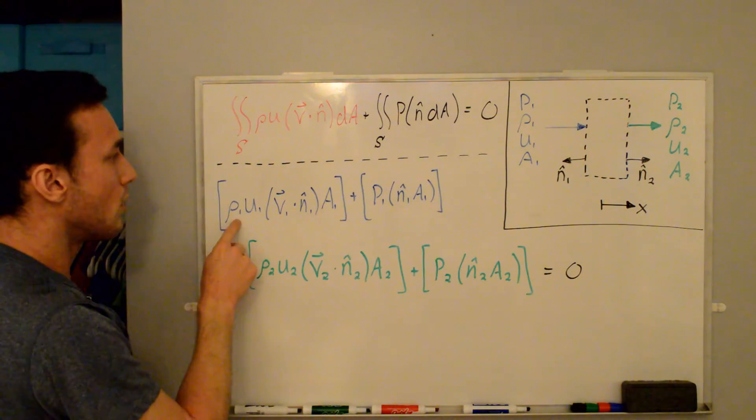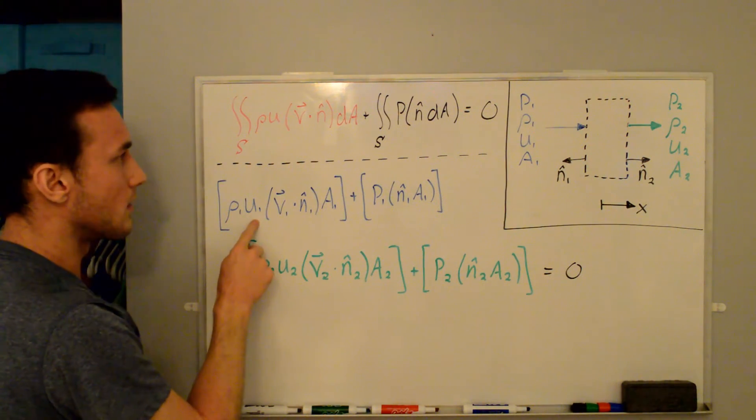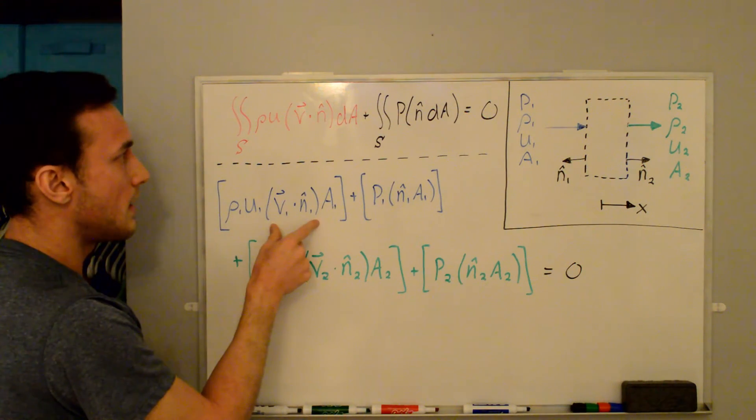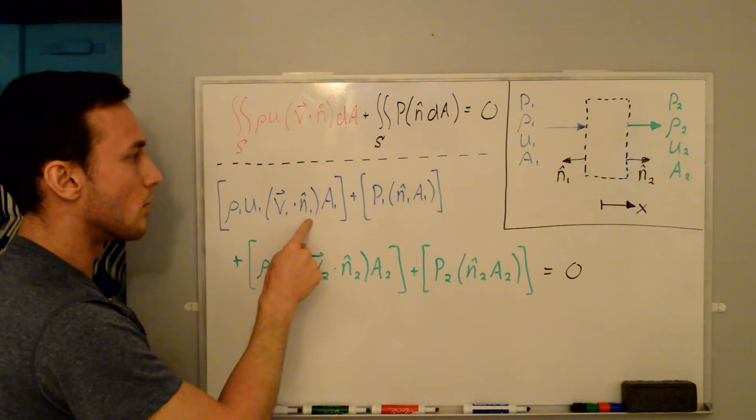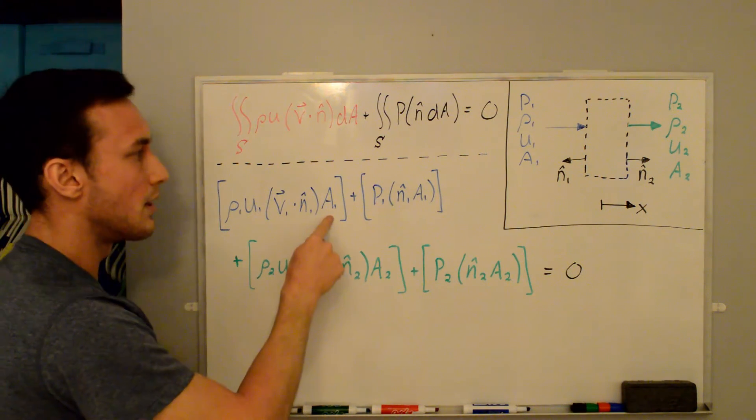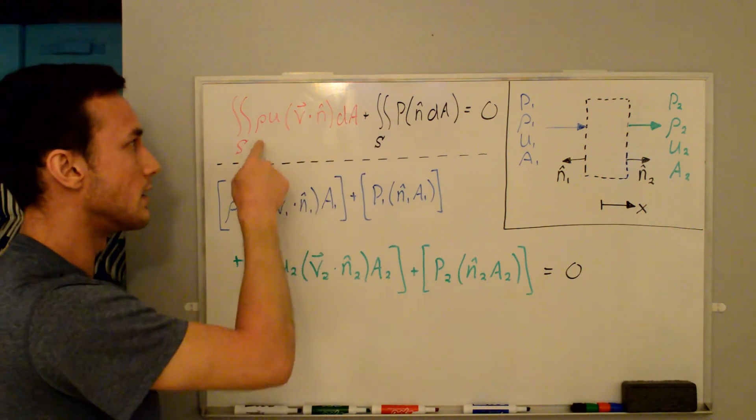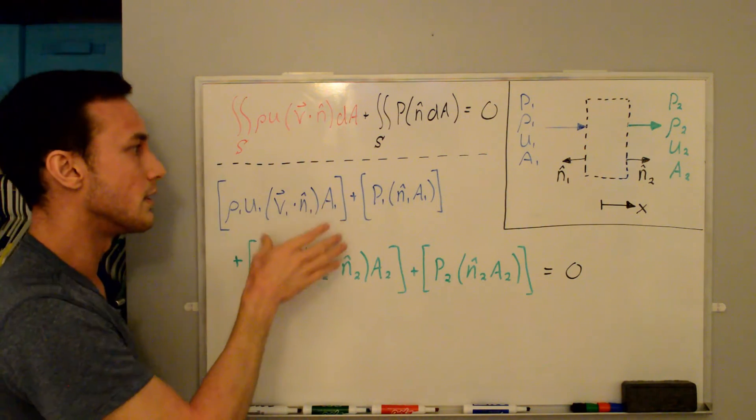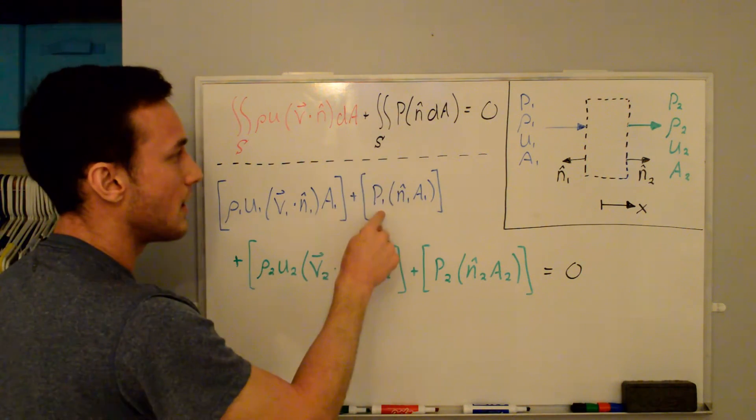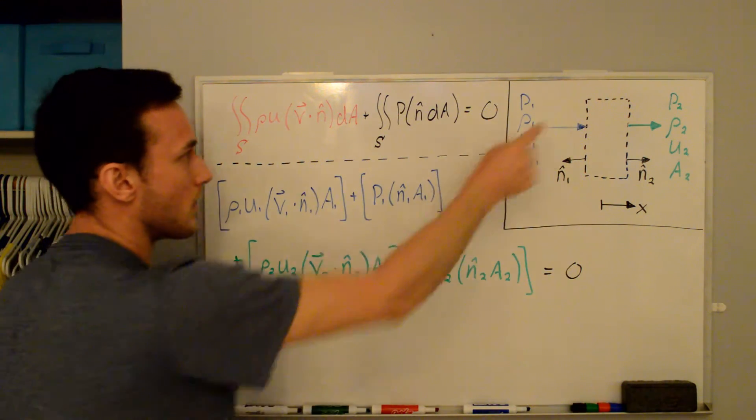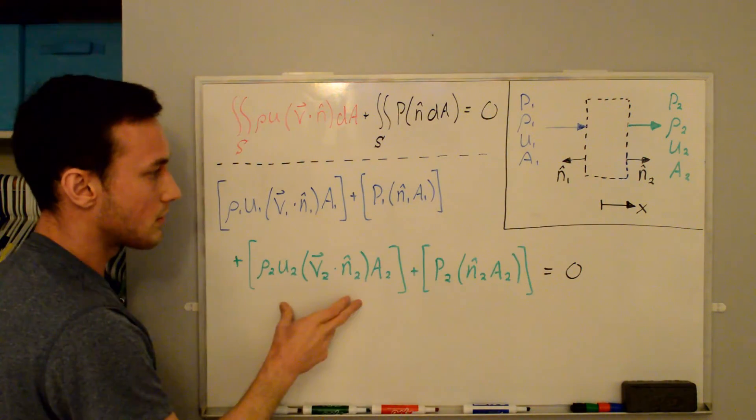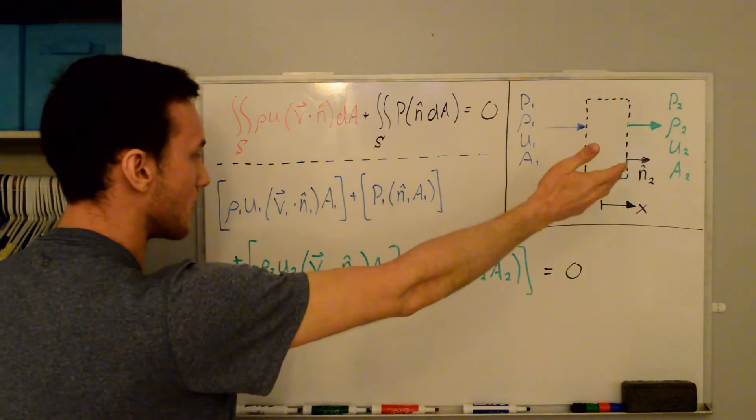And so we just have rho 1 times u1, the scalar velocity. And then here we have the velocity at 1 dotted with the outward normal at 1, and then we have multiplied by the scalar area because we've integrated over the surface. And then here we have the pressure at 1 times the n hat 1 times a1 because we're on the left surface. And then similarly we have these two terms for the right hand surface here.